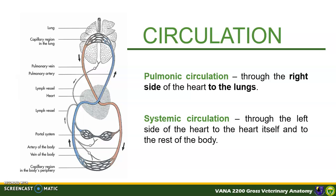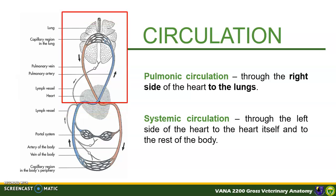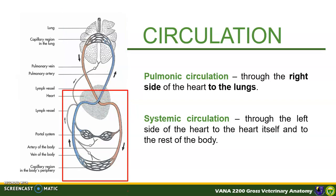Blood in animals is around 6–8% of the total body weight. Circulation time is around 30 seconds in large animals, or as fast as 7 seconds in cats. The system has two types of circulation, normally in a figure-of-eight fashion. The pulmonic circulation is through the right side of the heart to the lungs, while the systemic circulation is through the left side of the heart to the rest of the body.